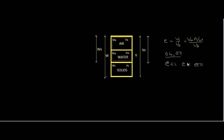When is void ratio equal to one? It is possible when the volume of voids equals the volume of solids. There is no specific soil type or arrangement that always shows this — it is only a volumetric relation. Whenever volume of voids equals volume of solids, the void ratio equals one.